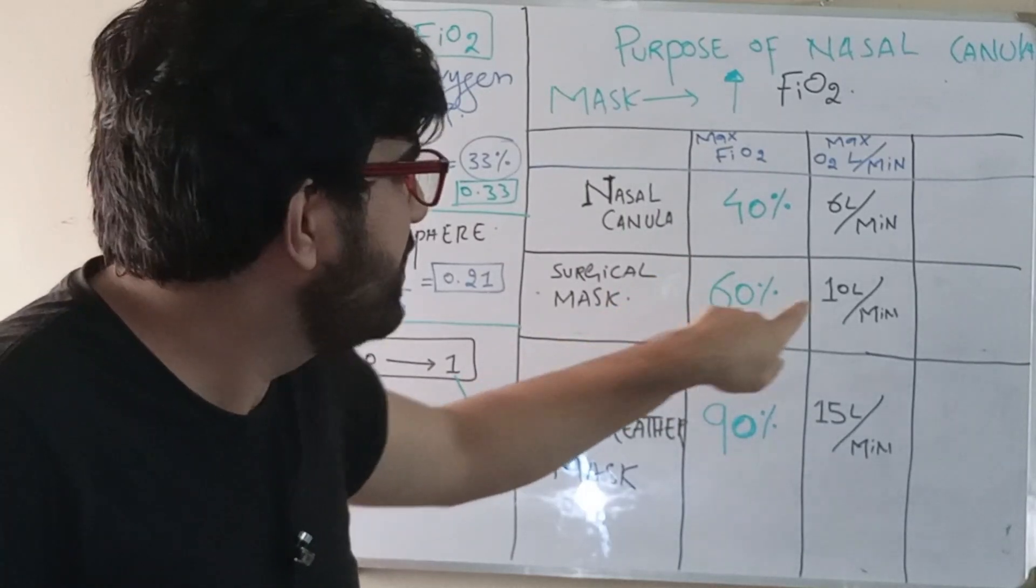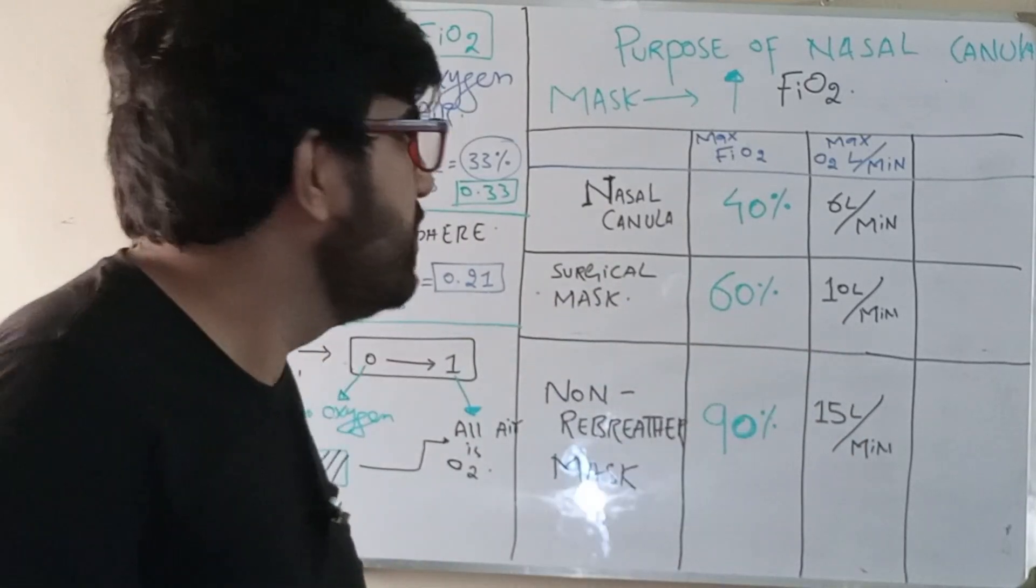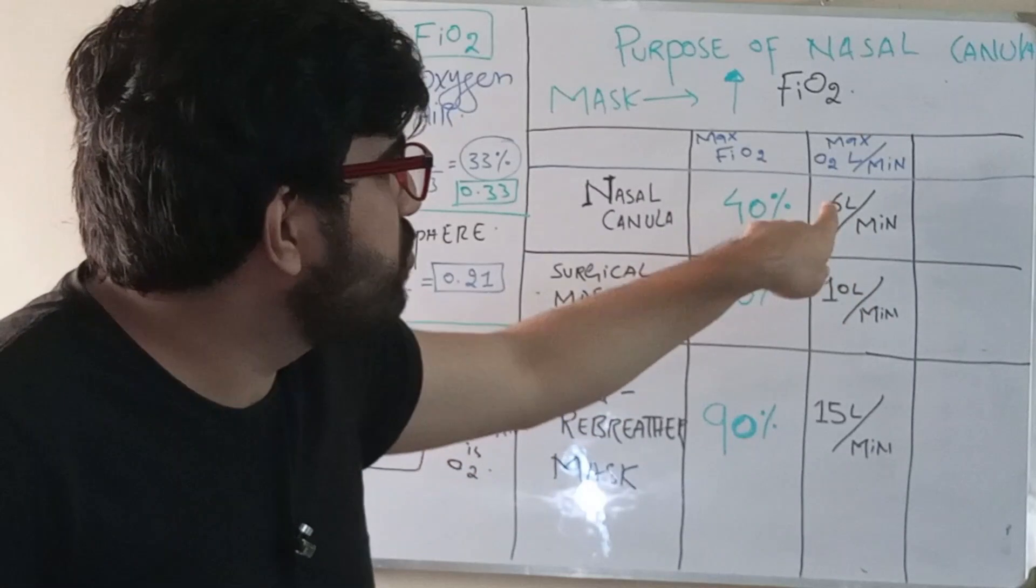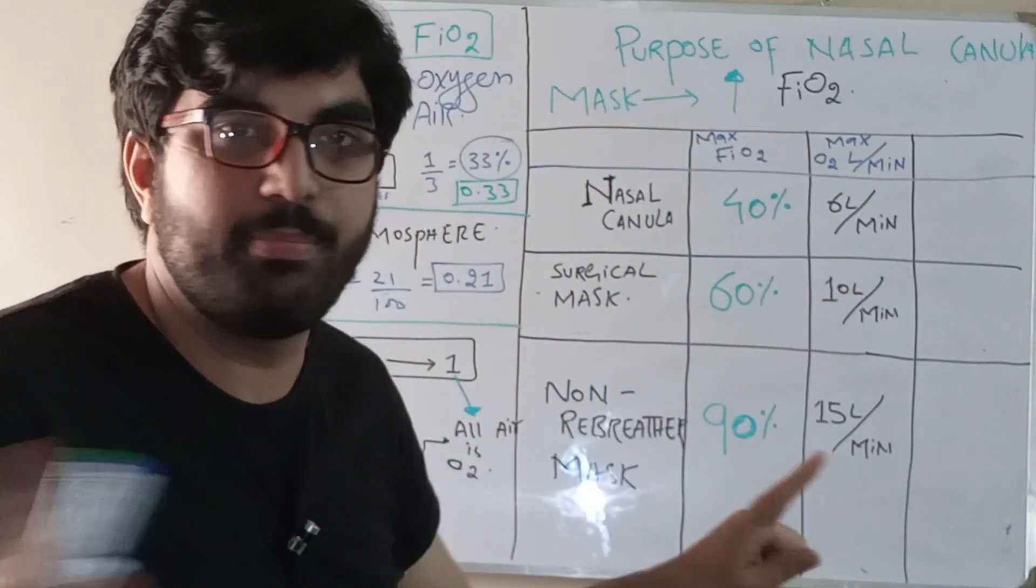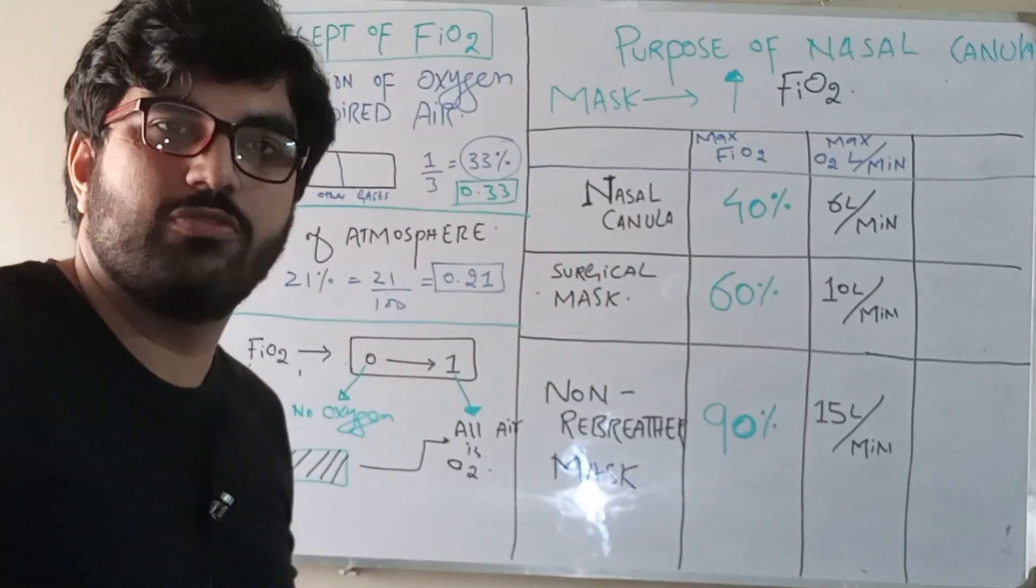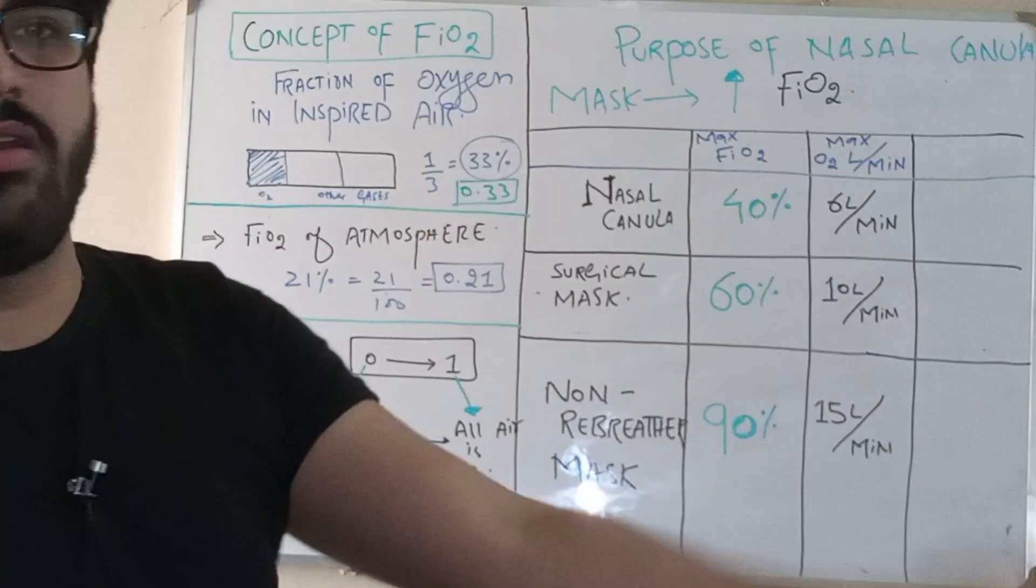It can give 0.6 and the maximum amount of oxygen that we give is ten liters per minute, not more than that. So if you start the patient on nasal cannula and you reach six liters per minute, but the patient is not achieving the desired amount of saturation - for example, say our target is more than 90%.